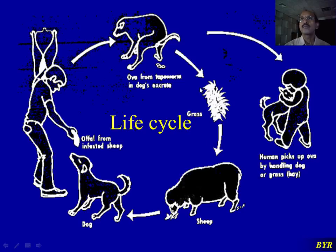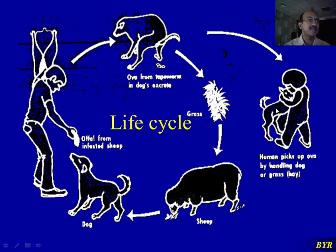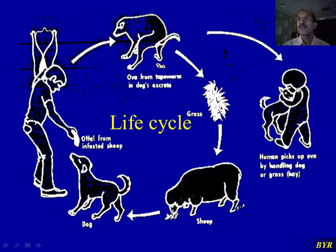By accident, if the parasite is unlucky, the eggs reach a human being. When a person fondles a dog whose skin is contaminated with fecal discharge containing eggs, the eggs can reach the person's hands. If proper hygienic measures are not followed, the eggs enter the human intestines and differentiate into the larval form — that is, cysts — which can form in various parts of the body, most commonly in the liver.